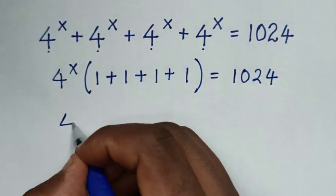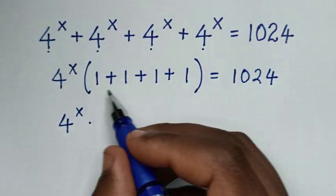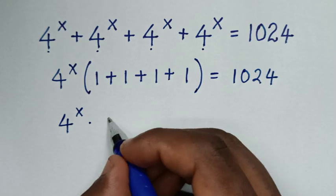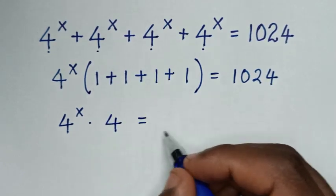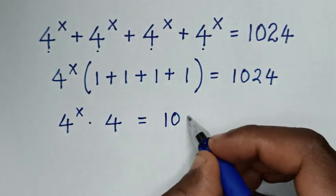Then it will be 4^x times (1 + 1 + 1 + 1), which is 4, equals 1024.